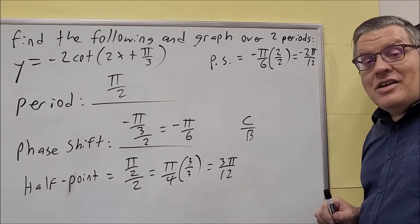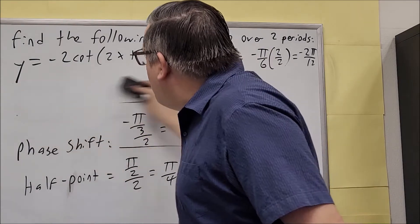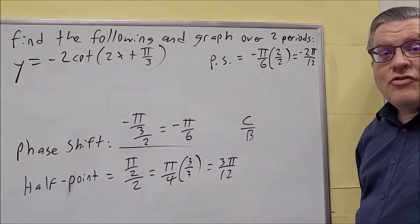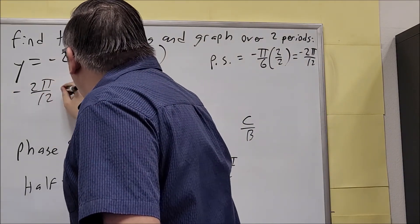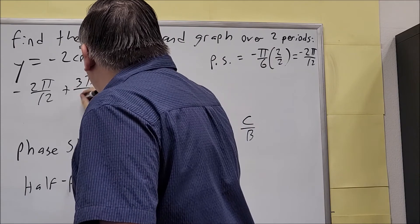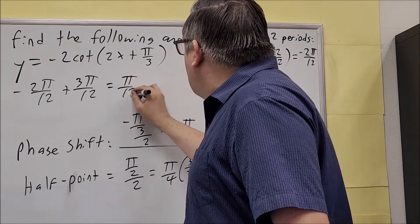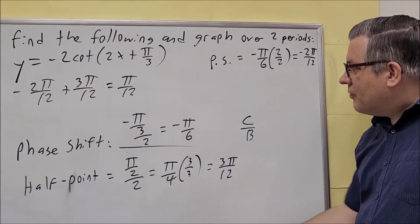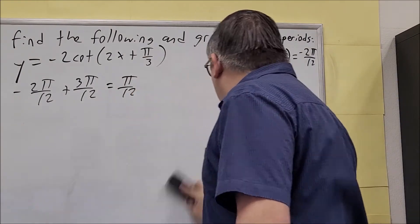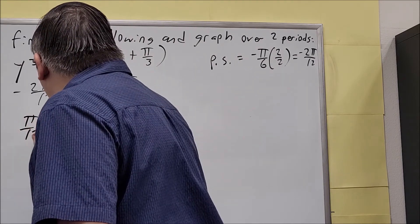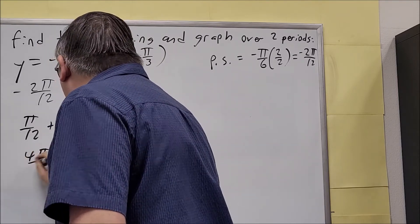And every time, we're going to add 3π over 12 to it all the way through. So let's find the other key points. This time, we will write them down because we're dealing with fractions here. Start with this, negative 2π over 12. And I'm adding 3π over 12 to it. So if I add 3π over 12 to it, we're going to get positive π over 12. And then we're just going to keep adding 3π over 12 each time to get the other key points.